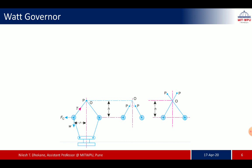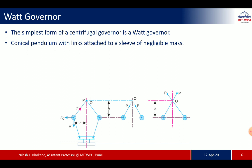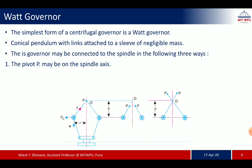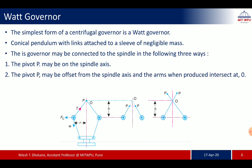The Watt governor is the simplest form of the centrifugal governor — a conical pendulum with links attached to a sleeve of negligible mass. The Watt governor may be connected to the spindle in three ways: the pivot P may be on the spindle axis as shown in the first diagram; the pivot P may be offset from the spindle axis with the arms intersecting at O as shown in the second diagram; or the pivot P may be offset but the arms cross the axis at O as shown in the third diagram.